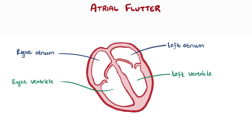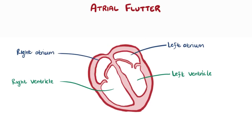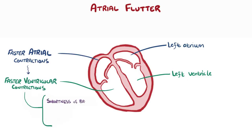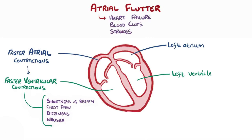As a quick recap, atrial flutter is when the atria repeatedly contract at really high rates, usually due to an underlying condition combined with a premature atrial contraction. Faster atrial contractions in turn increase the rate of ventricular contractions, which can cause shortness of breath, chest pain, dizziness, and nausea in certain people. Over time, atrial flutter can lead to heart failure, blood clots, and strokes.